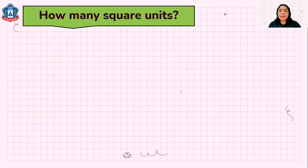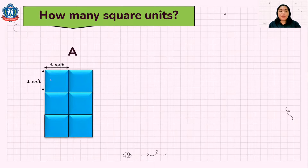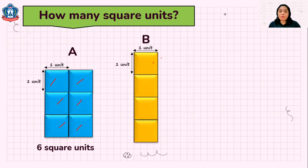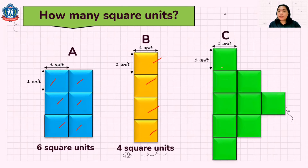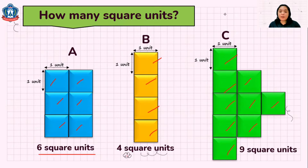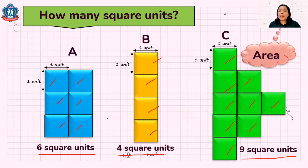How many square units? Let's count the number of square units in each figure. We have 1, 2, 3, 4, 5, 6. So we have 6 squares, so the area is 6 square units. For figure B, we have 1, 2, 3, 4 — so we have 4 square units. Then figure C, we have 1, 2, 3, 4, 5, 6, 7, 8, 9 — so there are 9 square units. When we say 6 square units, 4 square units, and 9 square units, we are talking about area.